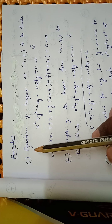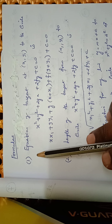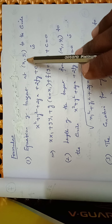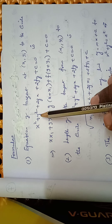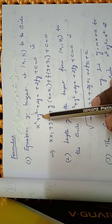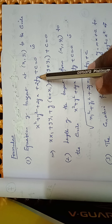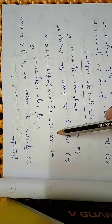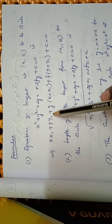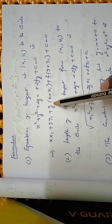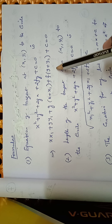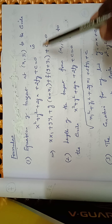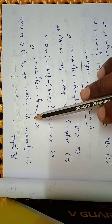Formulas. First one: the equation of the tangent at (x1, y1) to the circle x² + y² + 2gx + 2fy + c = 0 is xx1 + yy1 + g(x + x1) + f(y + y1) + c = 0. This is the equation of the tangent to the circle.